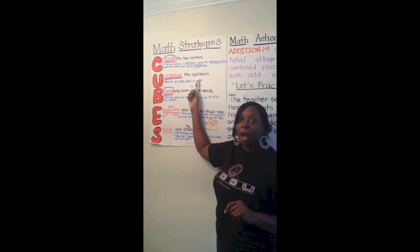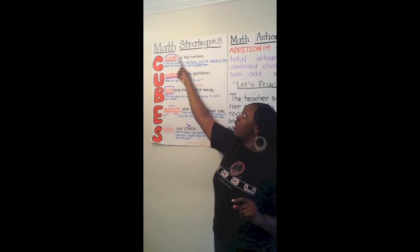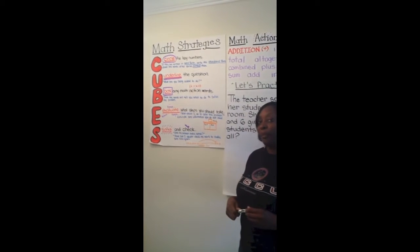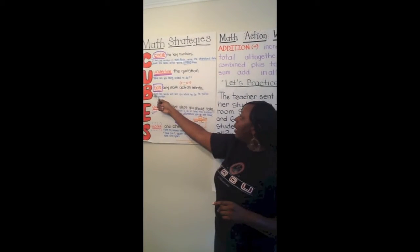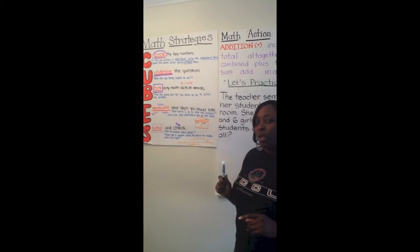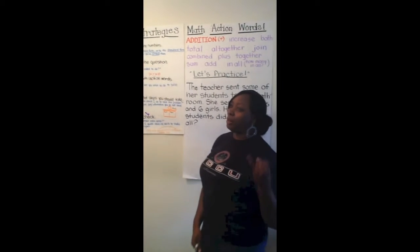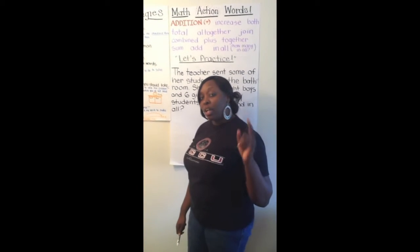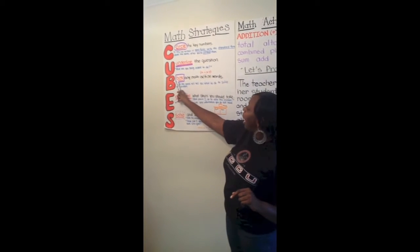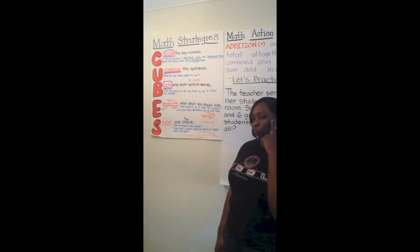U means to underline the question. In every story problem, it's normally going to end with a question. After you have circled the key numbers, you're going to underline the question. From there we move to B — B means to box any math action words. Math action words are words that give you clues on what kind of math you're doing: are you going to be adding or subtracting?